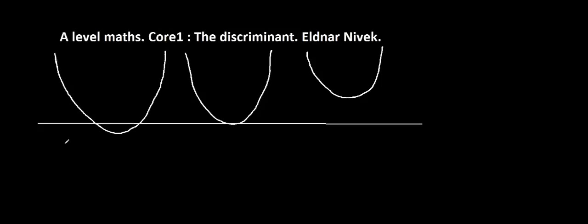Hi, so A Level Maths, it's Aldenar Nivek, and we're looking at what is known as a discriminant. In the formula for quadratic equations, we have a part which says b squared minus 4ac.